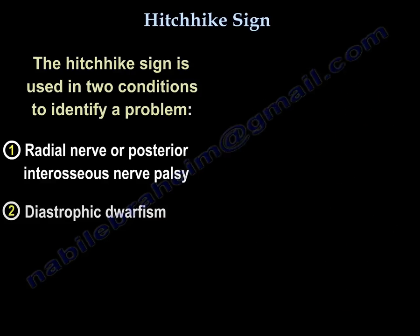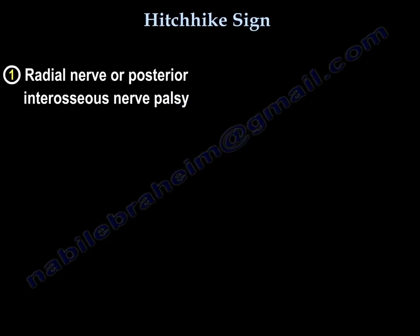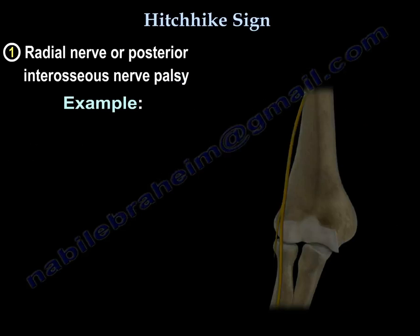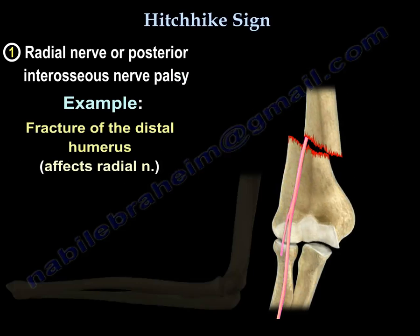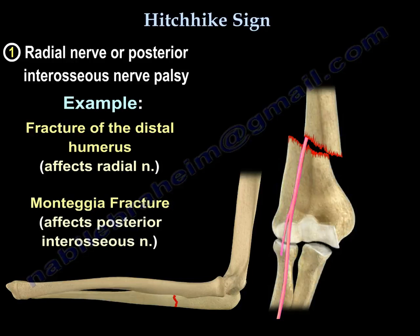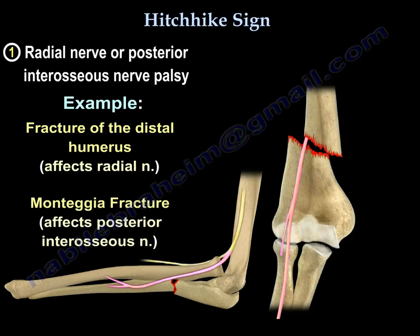An example of radial nerve palsy is a fracture of the distal third of the humerus. An example of posterior interosseous nerve palsy is an injury or surgery around the elbow, such as a Monteggia fracture.